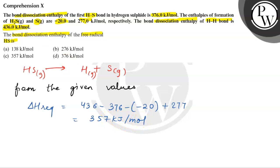This will be the bond dissociation energy of the free radical, 357 kJ per mole. Option C will be the correct option. I hope the concept is clear.